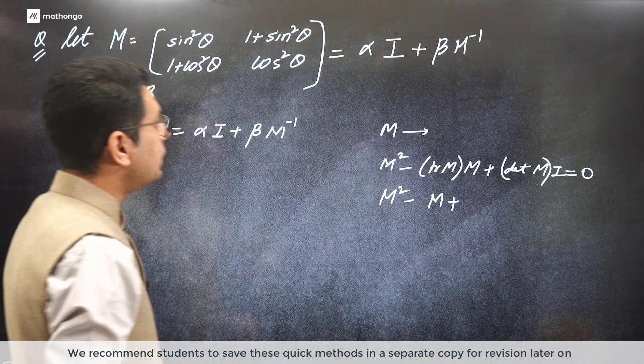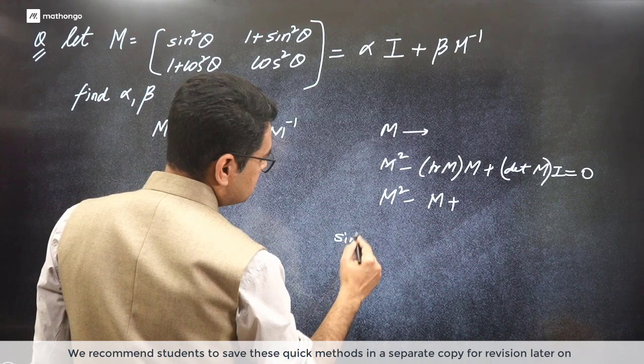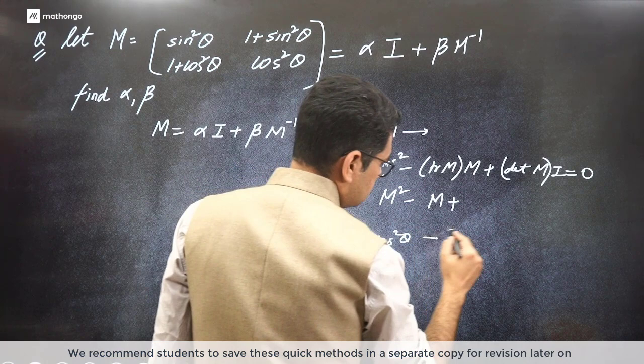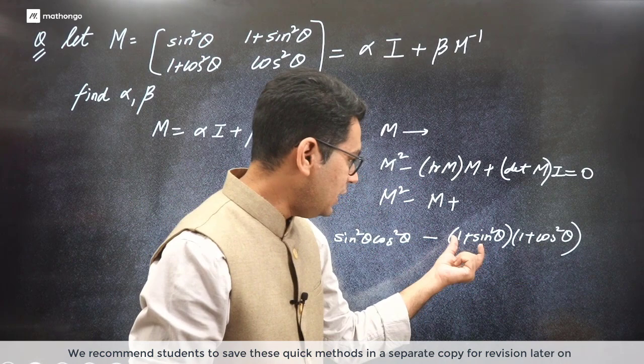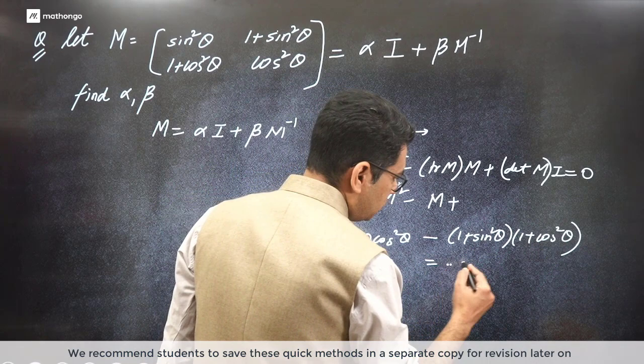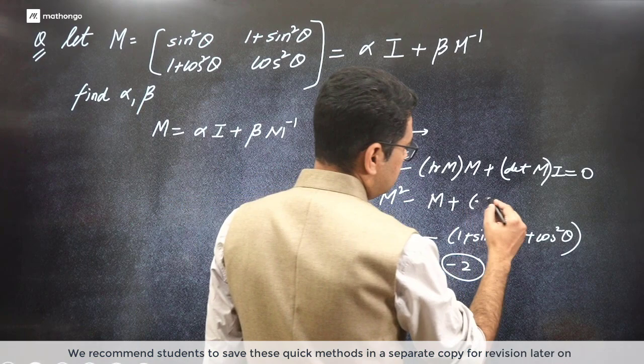If we try to find its determinant, look at the determinant - it's a bit difficult. What will it be? sin square theta cos square theta minus 1 plus sin square theta into 1 plus cos square theta. You can easily see the sin square theta cos square theta components cancel. One is 1, one is sin square theta, one is this. So you can easily see this comes out to be minus 2. So what do you do here? Minus 2 times I. So this actually becomes the characteristic equation.